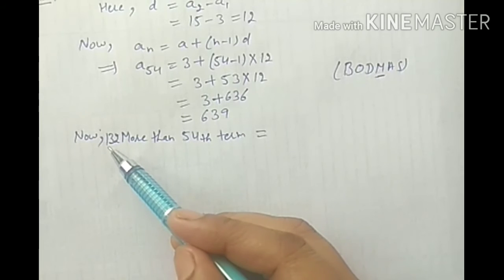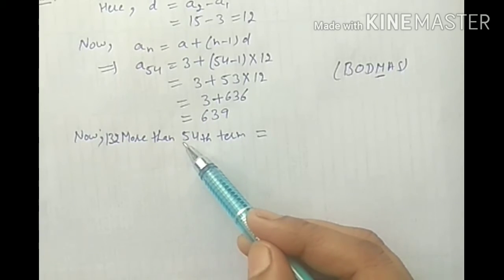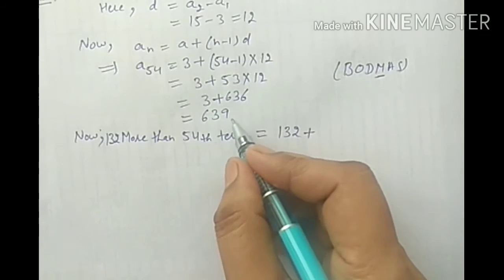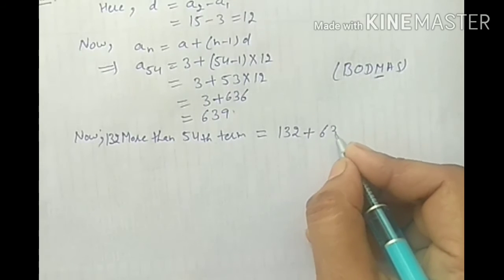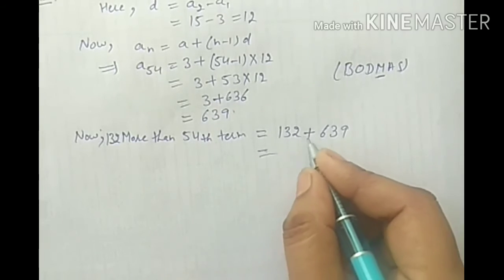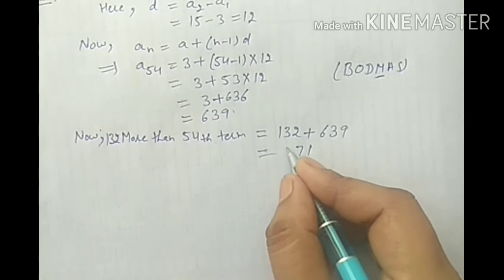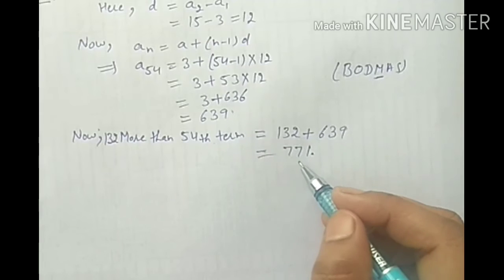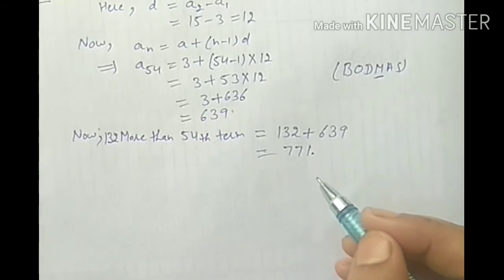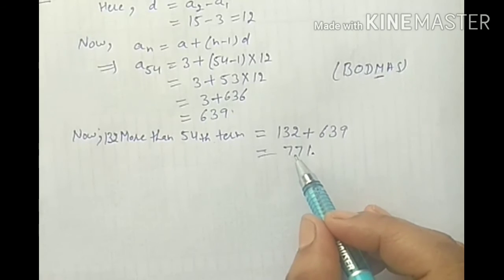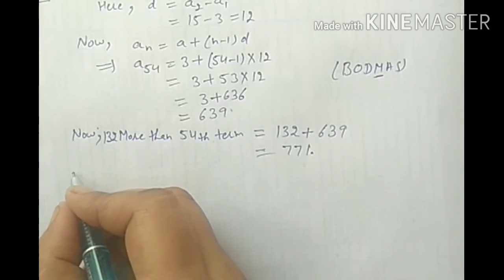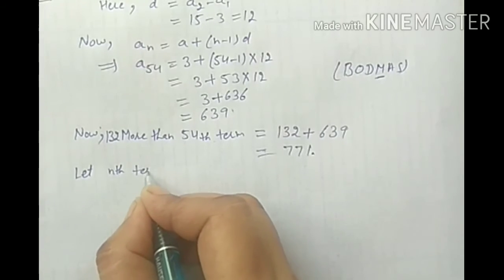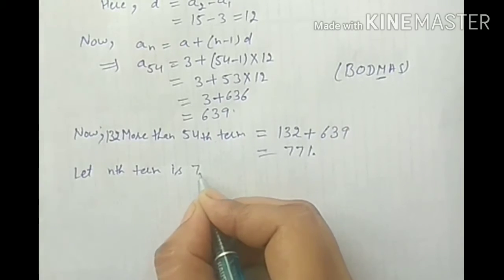According to question, we will find out 132 more than the 54th term. It means 132 plus 54th term: 132 plus 639 equals 771. So our required number is 771. Students, अब हमें ये बताना है कि ये number कौन सी term है - given AP में ये किस position पर आएगा? So let the Nth term be 771.